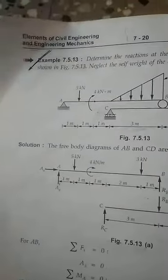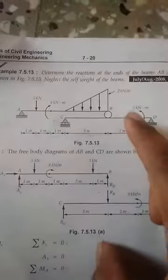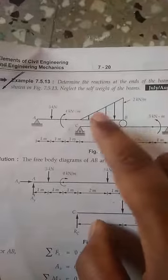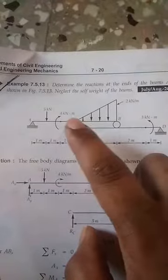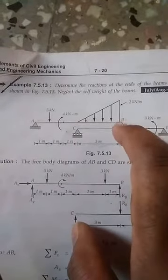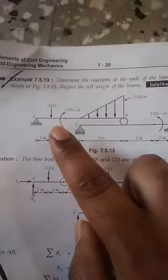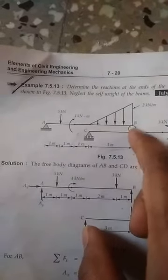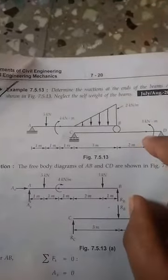This is another problem you have to be very careful about. It is a typical two-beam section — beam AB and beam CD. In beam AB, support B is a roller and A is a hinge support. C is a roller, and B should be taken as a roller only, not as a hinge. There is a moment acting at a point.